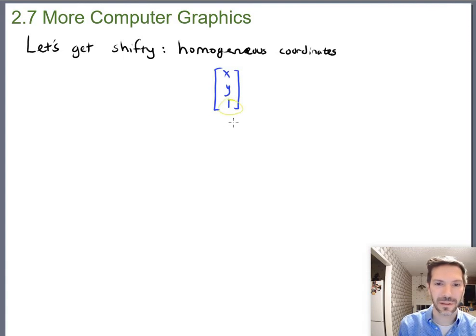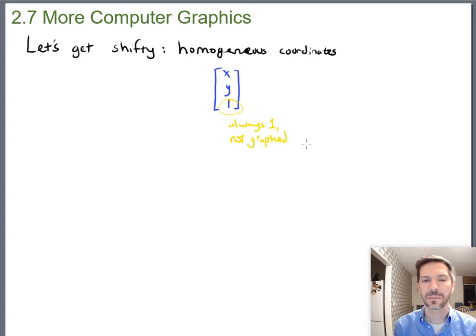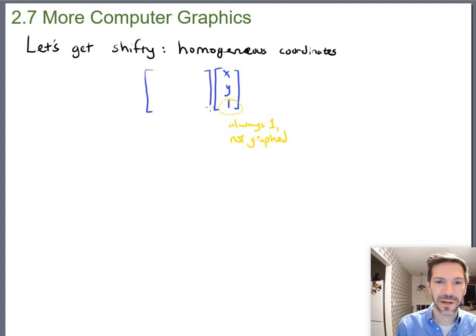So you just understand and you write your code to have three entries, but that third one's always one and not used for the graphing. Let's see how that helps us out.